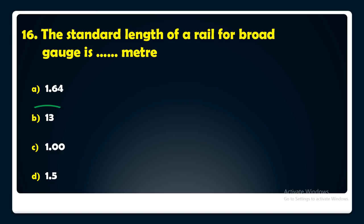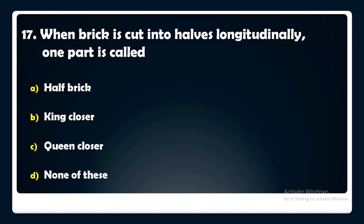When a brick is cut into halves longitudinally, one part is called — half brick, king closer, queen closer, or none of these? The answer is: when a brick is cut into halves longitudinally, one part is called a queen closer.